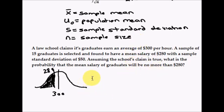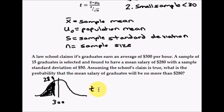Let's go back to our t-score formula. We have t equals x-bar minus mu sub-zero all over s divided by the square root of N. And our x-bar is our sample mean. Our sample has a mean salary of $280.